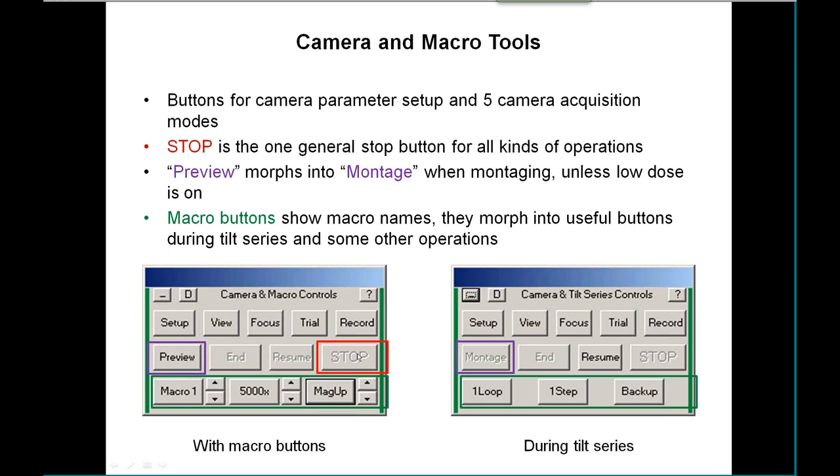The stop button is a general purpose stop button that will stop all kinds of operations, except image acquisition is hard to stop sometimes because you've told the camera to go off and do something. This preview button will morph into montage when you montage, unless you're in low dose where preview is more important.